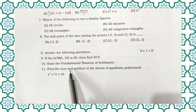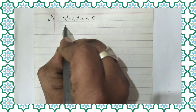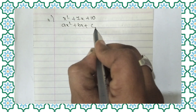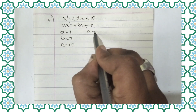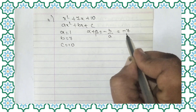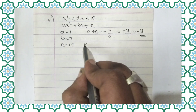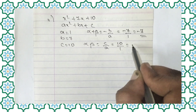Now let us move to question number 11: Find the sum and product of the zeros of the quadratic polynomial x² plus 7x plus 10. Here a equals 1, b equals 7, c equals 10. Alpha plus beta equals minus b by a equals minus 7 by 1, which is minus 7. Alpha times beta equals c by a equals 10 by 1, which is 10.